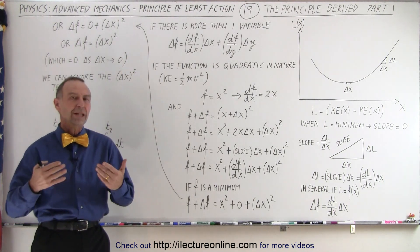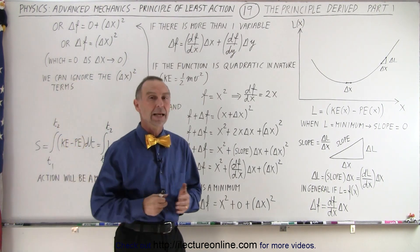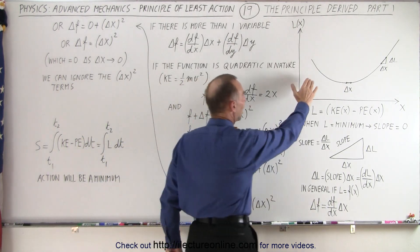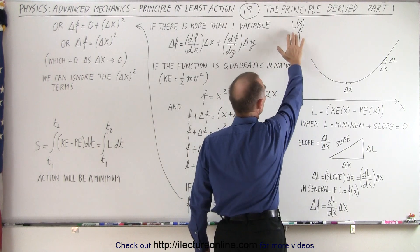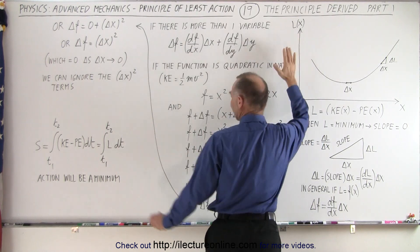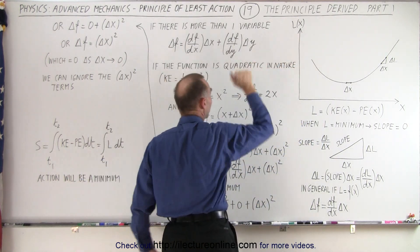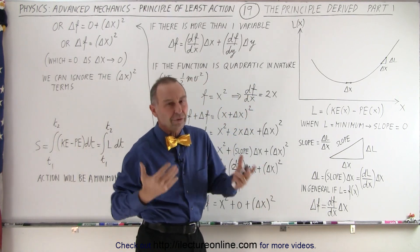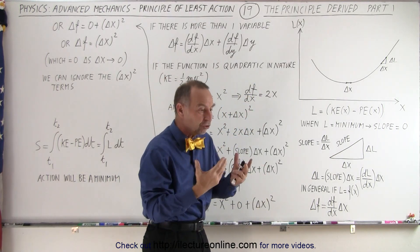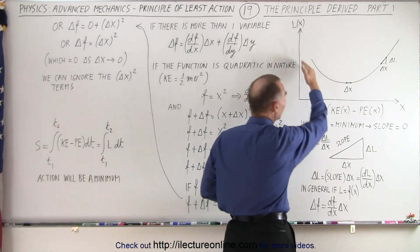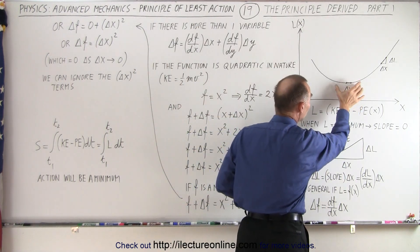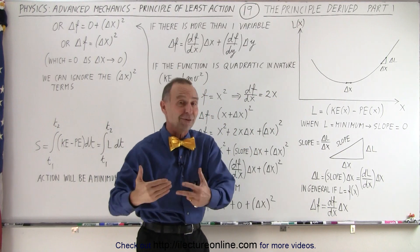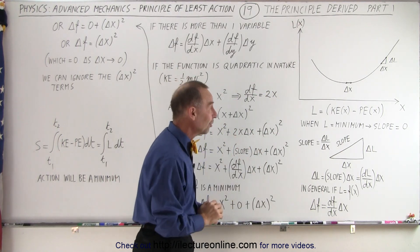So how do we show that mathematically? In order to show that, we're going to take a look at this graph, which represents what's inside the integral — what we call the Lagrangian — as a function of x. But it can be a general function. Whenever we have a general function, we know that wherever the function is a minimum, the derivative of that function will be equal to zero.